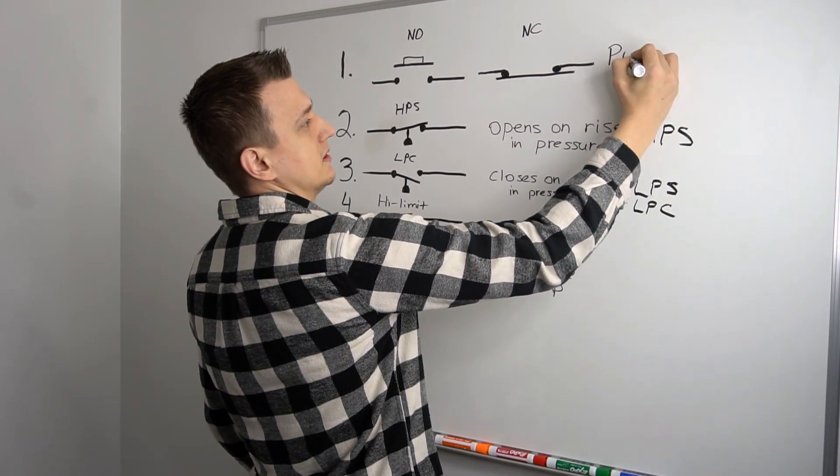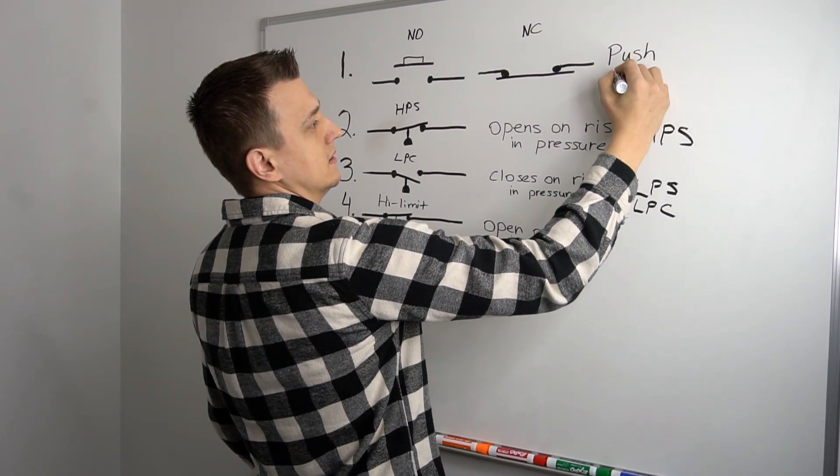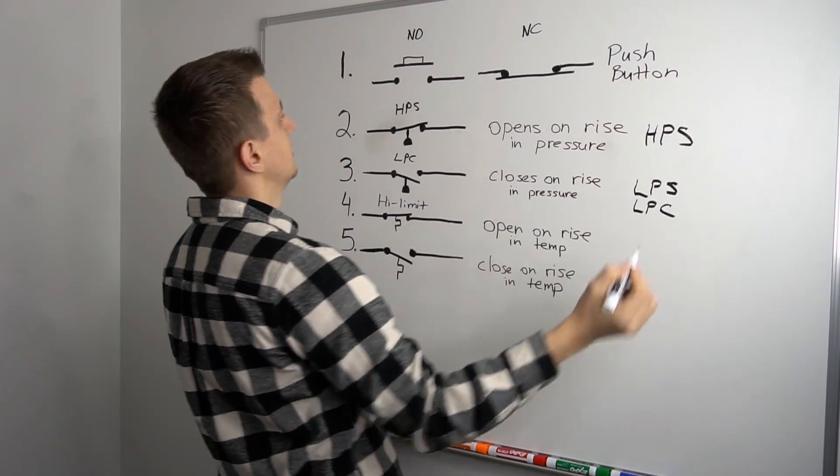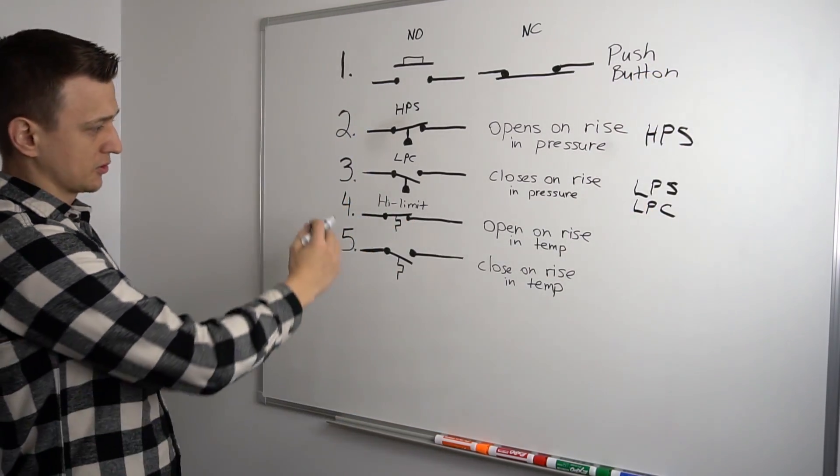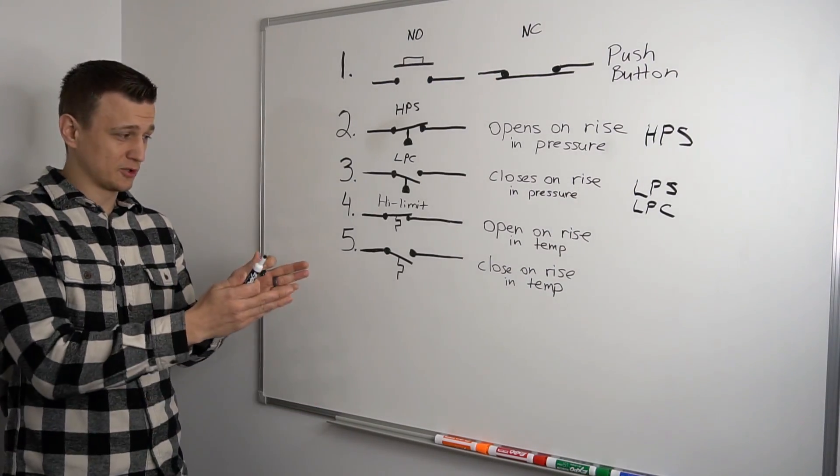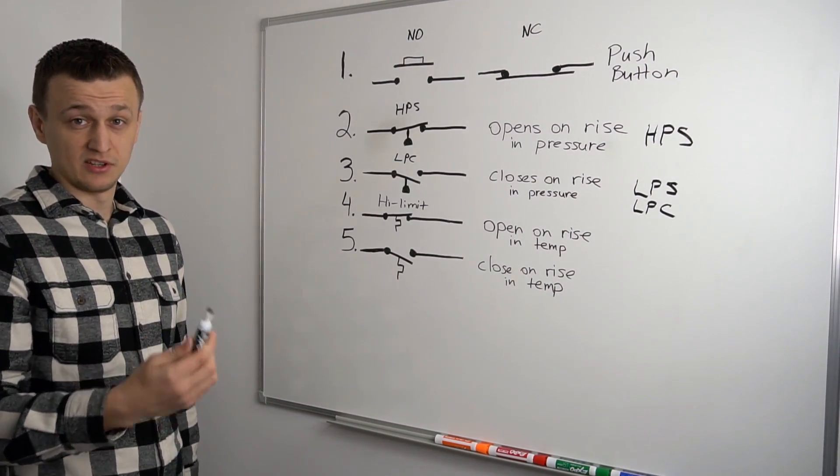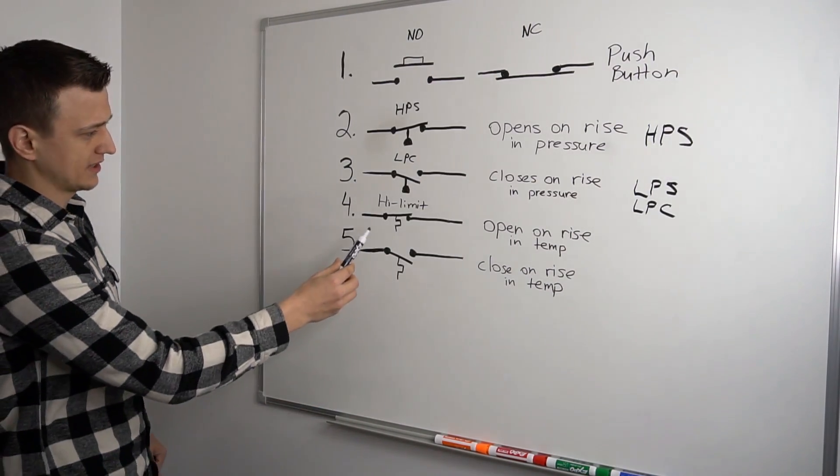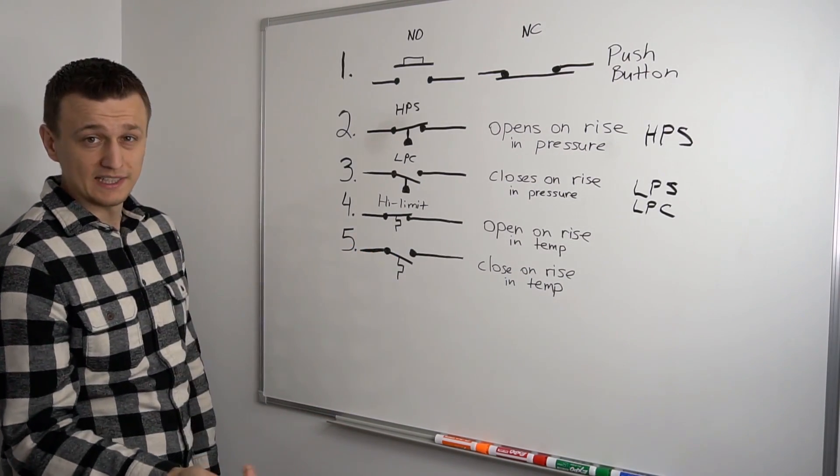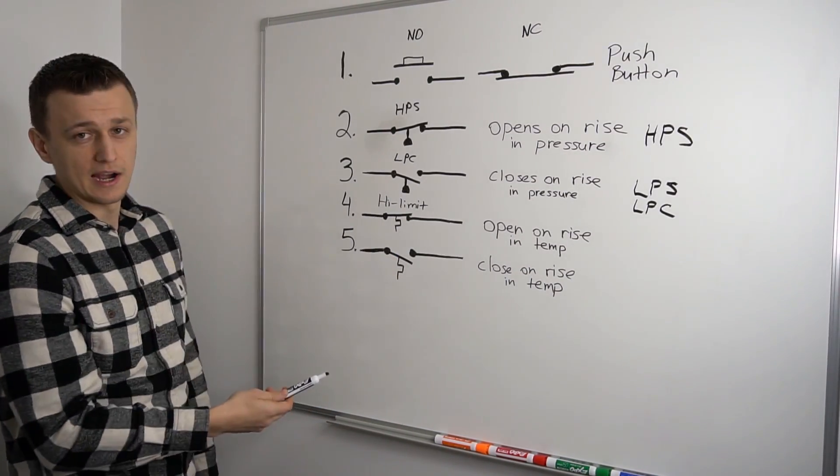And you know what, let's write this down too. This is a push button. Since I already have a bunch of words on here, might as well label it all. So this would be a high limit or a flame rollout. And of course, these temperature switches, the best example is in a thermostat, right? So if we think about it, in a thermostat, which one of these would be W for heat and which one of these would be Y for cooling?